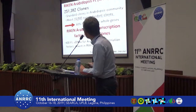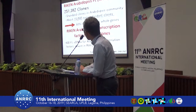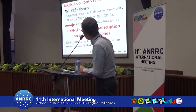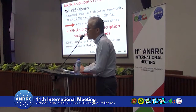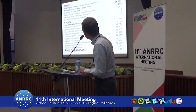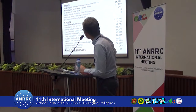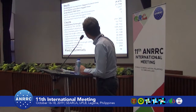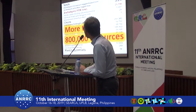However, we cannot distribute the other 40% of the Arabidopsis genes. So we collected cDNA for the Arabidopsis transcription factor genes which are absent in the RAFL clones. Then we can distribute almost all of the Arabidopsis genes for transcription factors. In total we can distribute the Arabidopsis genes, Arabidopsis clones, and plant cell cultures — more than 800,000 resources in total.